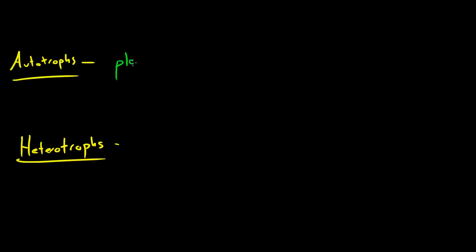So an autotroph would be like a plant, and of course plants get food through a process called photosynthesis. We're going to be talking about this later on, but it's not even that specific. Autotrophs are just organisms that make their own food.